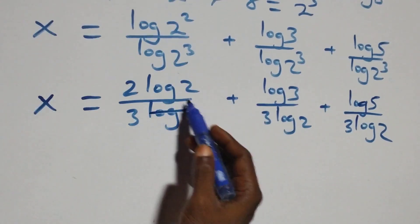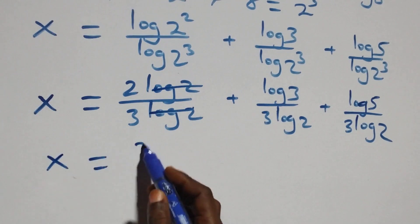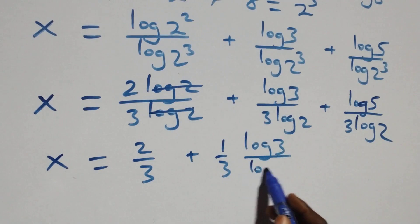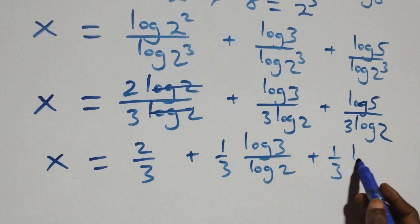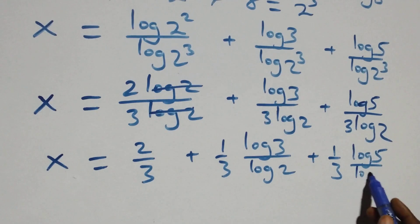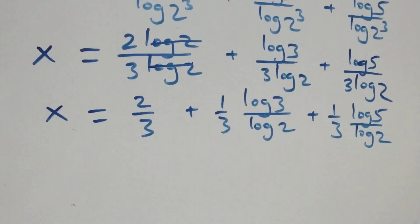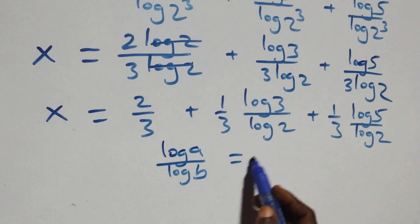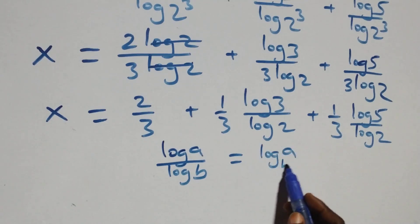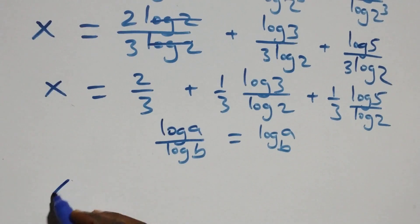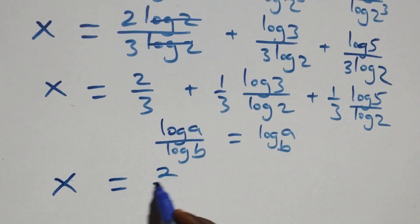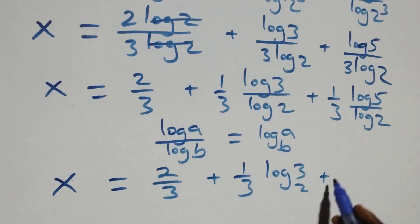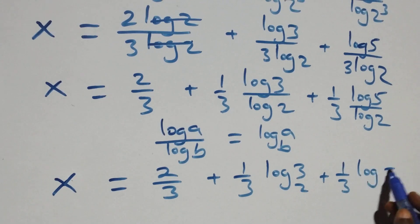As this here, we have log 2 cancel each other. We have x equals to 2 over 3 plus 1 over 3 times log 3 over log 2 plus also 1 over 3 times log 5 over log 2. Then we apply the change of base formula: when we have log A over log B, this is the same thing as log A to base B. So we have x equals to 2 over 3 plus 1 over 3 log 3 base 2 plus 1 over 3 log 5 base 2.